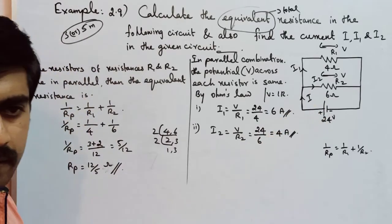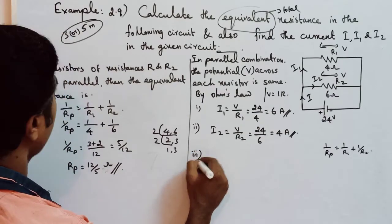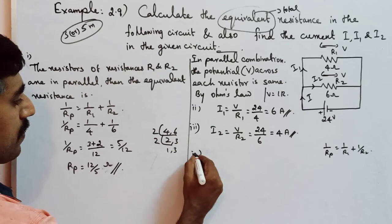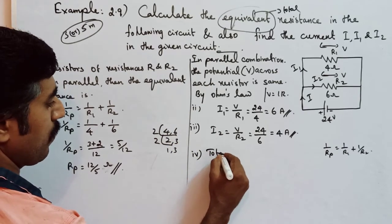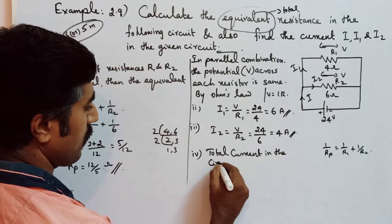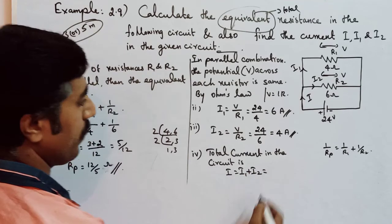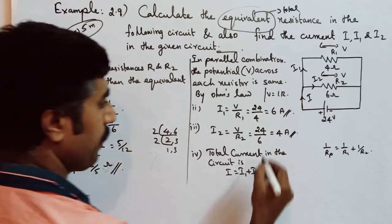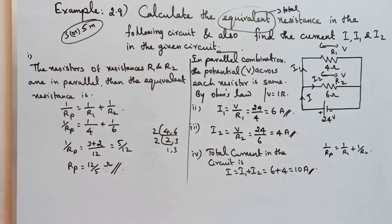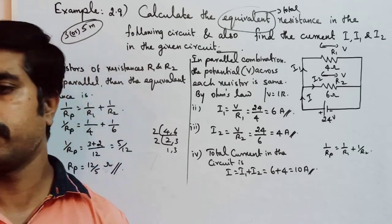Then I1 and I2 split, and the total current I in the circuit is I equals I1 plus I2, equal to 6 plus 4, equals 10 Ampere. So it's one 3 mark or 5 mark problem. In the case, maximum it's one 3 mark chance, okay?